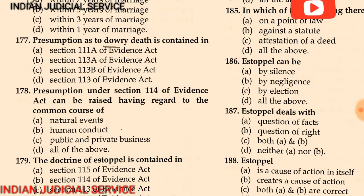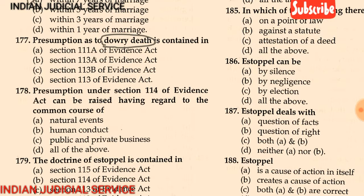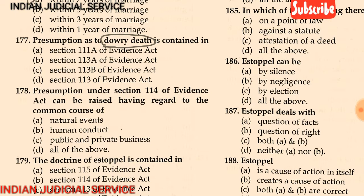Question 177: The presumption as to dowry death is contained in — (A) section 111A of Evidence Act, (B) section 113A of Evidence Act, (C) section 113B of Evidence Act, (D) section 113 of Evidence Act. The answer is option C: section 113B of the Evidence Act.